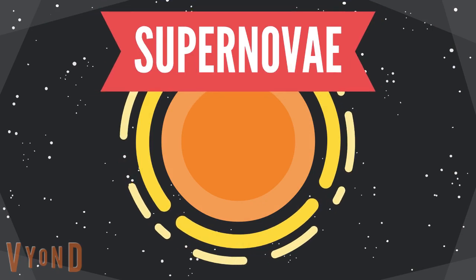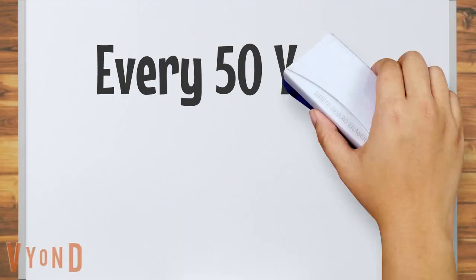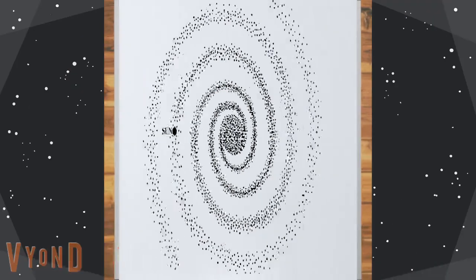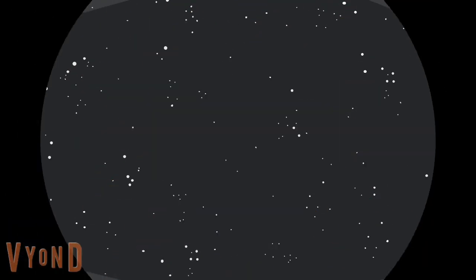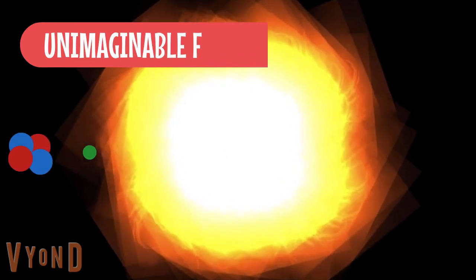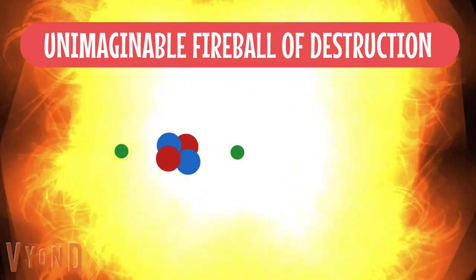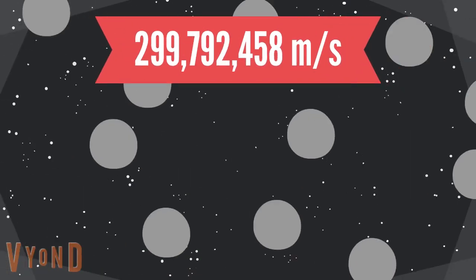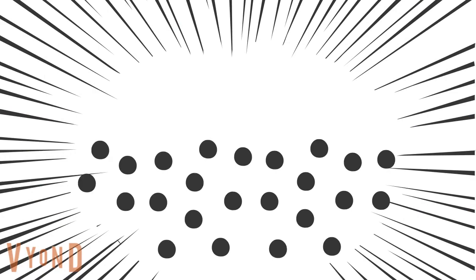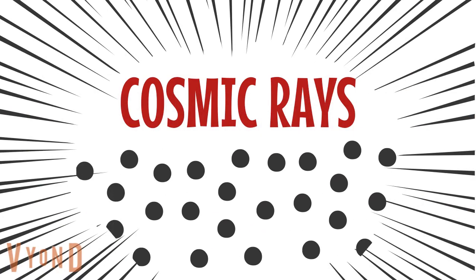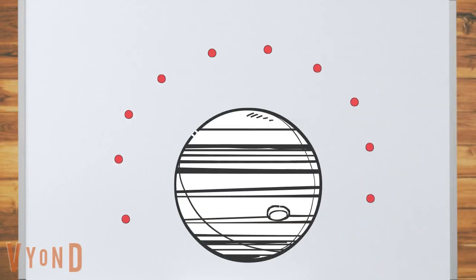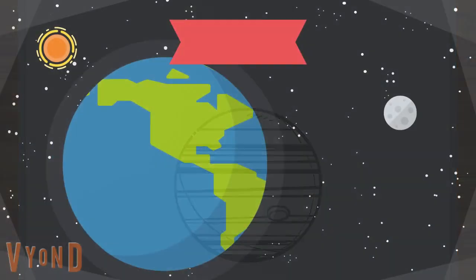Supernova. Every 50 or so years, one of the 100 billion stars in our galaxy explodes. In an unimaginable fireball of destruction, atoms are ripped apart and flung into space at near light speeds. These tiny flying particles are called cosmic rays. They fly all across the galaxy and rain down on planets, including our very own Earth.